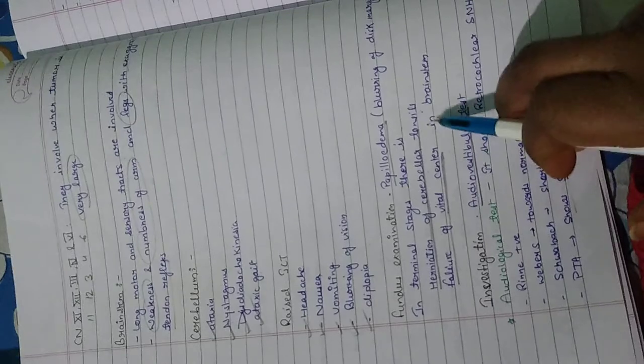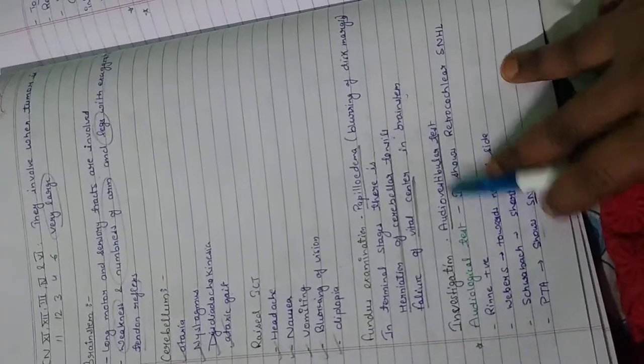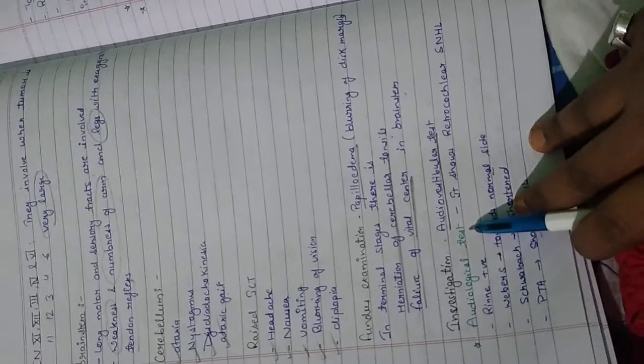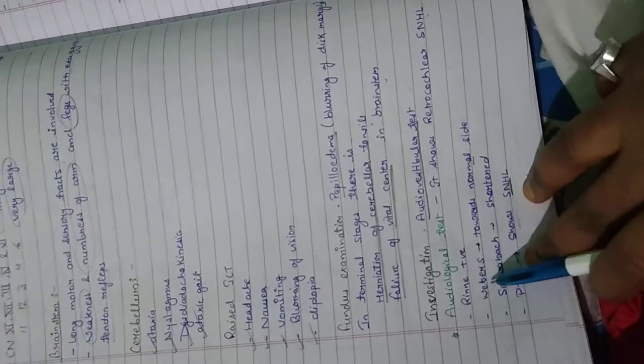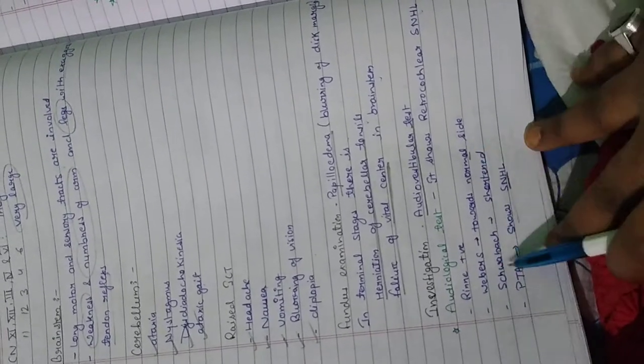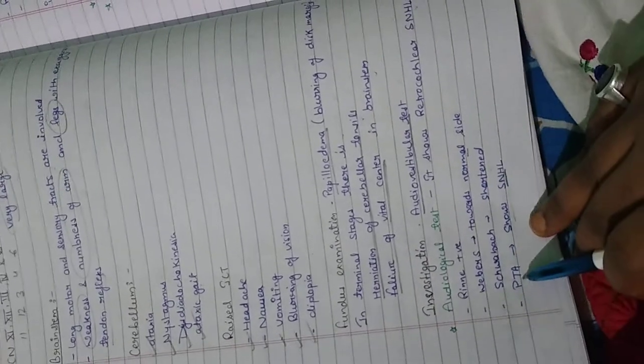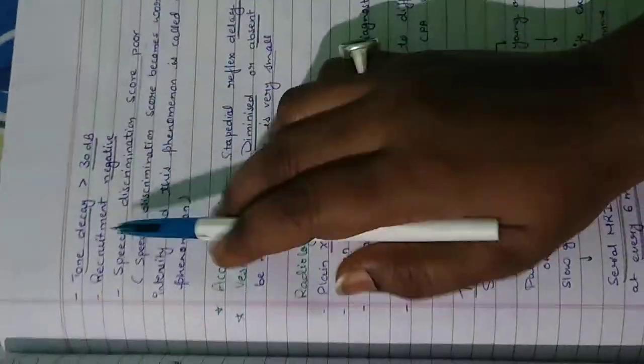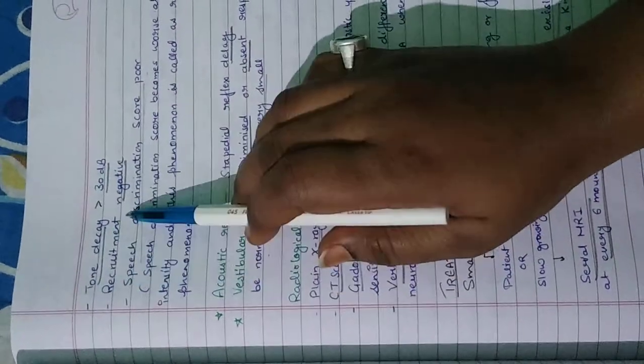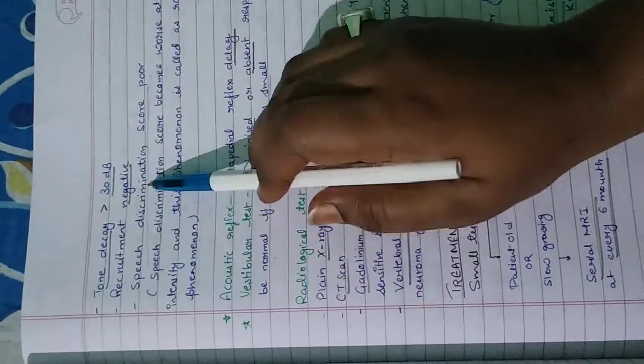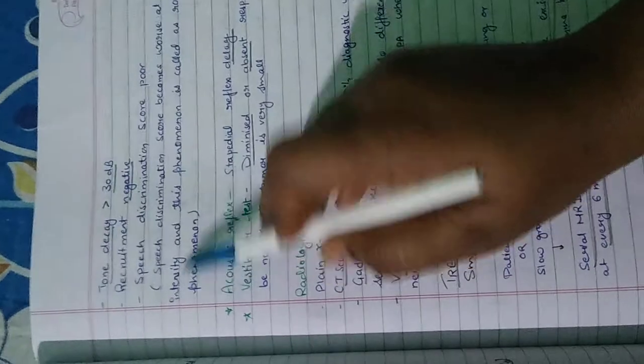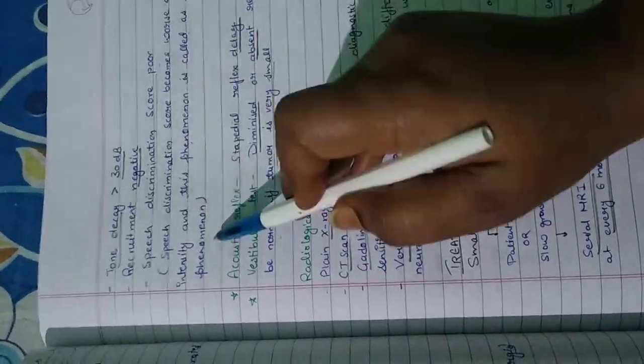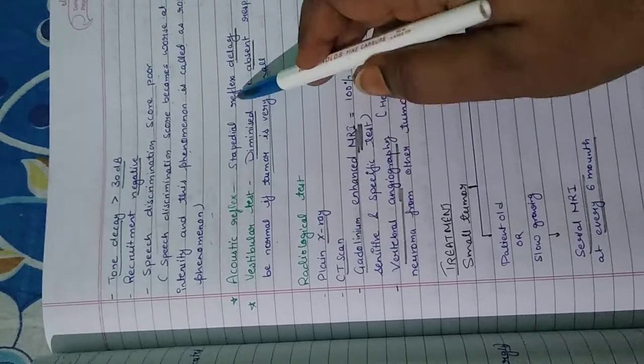Investigation: Audio-vestibular test - audiological test shows retrocochlear sensorineural hearing loss. Weber's test lateralizes to normal side, Rinne test shortened. Pure tone audiometry shows sensorineural hearing loss with tone decay at 30 decibel, recruitment is negative. Speech discrimination score becomes worse at higher speech intensity - this phenomenon is called roll-over phenomenon. Acoustic reflex shows stapedial reflex delay.